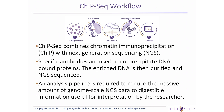ChIP-seq combines chromatin immunoprecipitation, or ChIP, with next-generation DNA sequencing. Initially, DNA is cross-linked to bound proteins, fragmented by sonication, and then immunoprecipitated with a specific antibody. The enriched DNA is purified and used to prepare sequencing libraries. Because next-generation sequencing produces so much information, an analysis pipeline is required to reduce this massive genome-scale data to something digestible that can be used to interpret answers to scientific questions such as those posed at the beginning of this presentation.